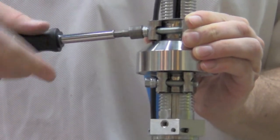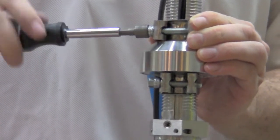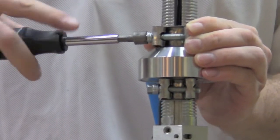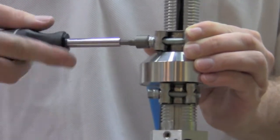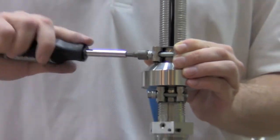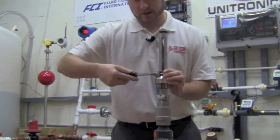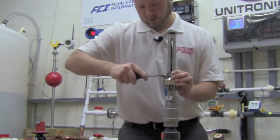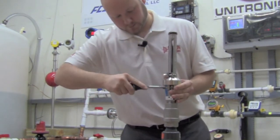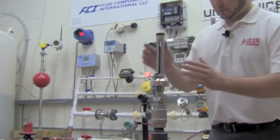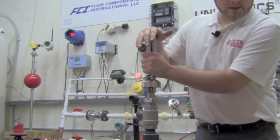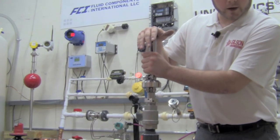You're going to use a 10 millimeter socket to tighten them into place. This will immobilize the adjustment collar once you have all of your points set. At this point, your physical installation is done, and you're ready to go.